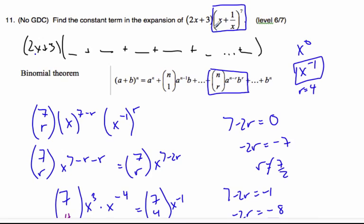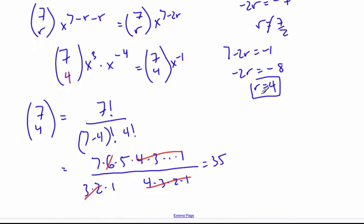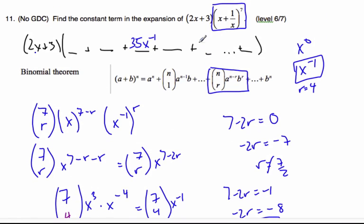So going back to the front here, I know that from this expansion, one of these terms is 35x to the minus 1. That's what I did all this work for. When r was 4, I got an x to the minus 1 with the coefficient being the 35 we figured out. So, there was no x to the power of 0, so I only need to find this term.